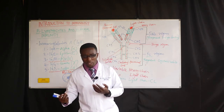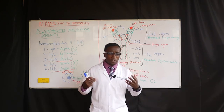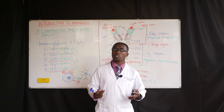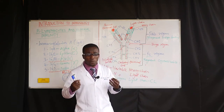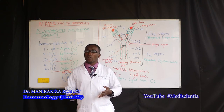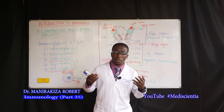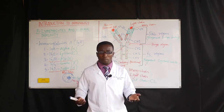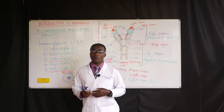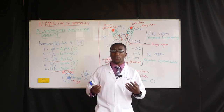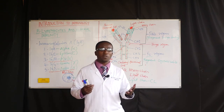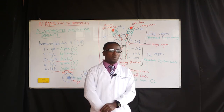In order for plasma cells to produce IgG, we need T-lymphocytes to come in — the T-helper cells. We are going to keep on appreciating a lot of things about this antibody.